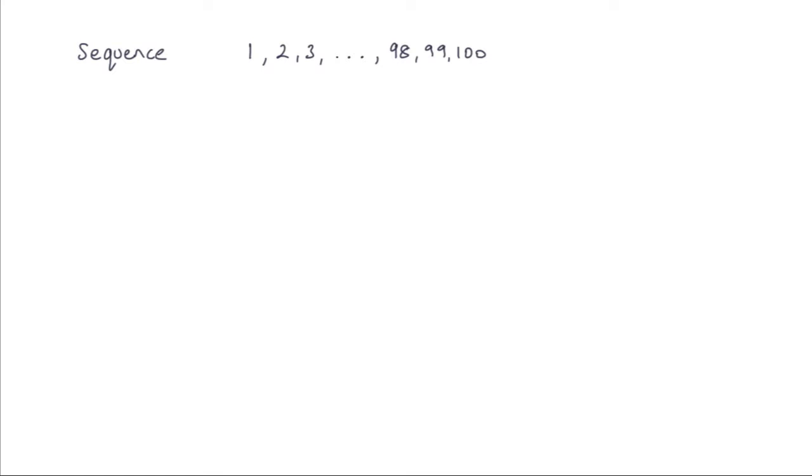First thing I have here is a sequence of numbers. Now sequence is basically just a list. So I've listed the numbers from 1, 2, 3. I've left three dots and the three dots means that this sequence continues. So 4, 5, 6, etc. all the way to 100.